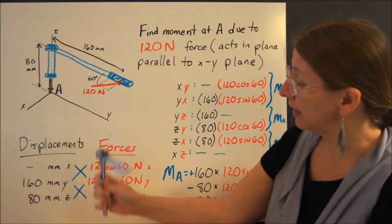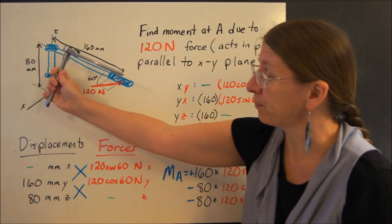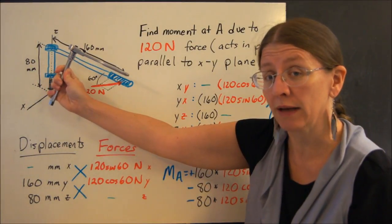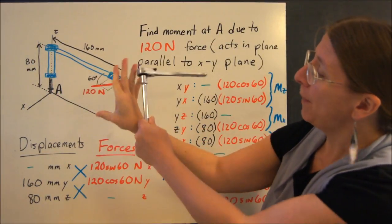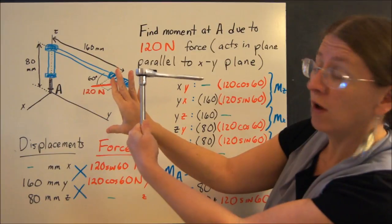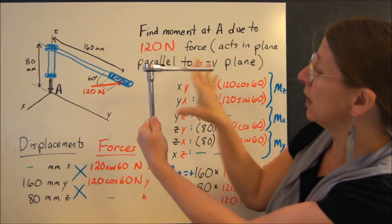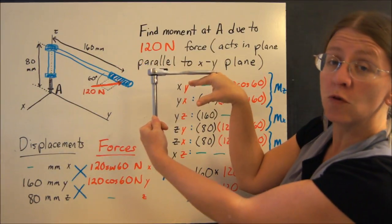So as you're looking at this wrench right here, how does it turn point A? With the scalar method, take your right hand, put it up the axis of the 80.